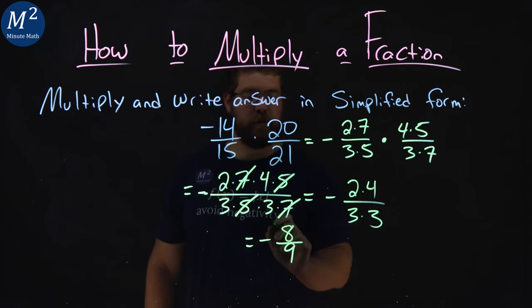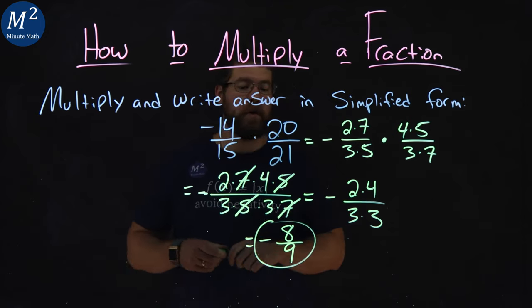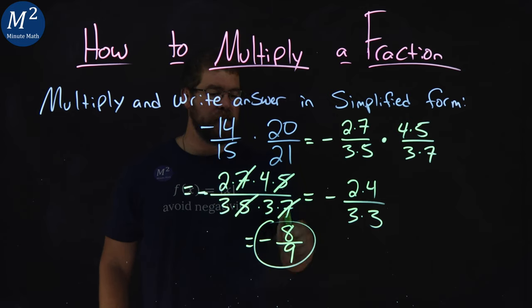Don't forget that negative. And there we have it. Negative 14 over 15 times 20 over 21 is equal to negative 8 over 9.